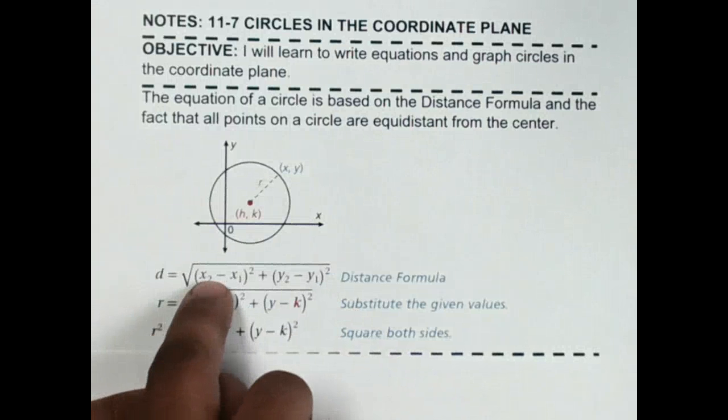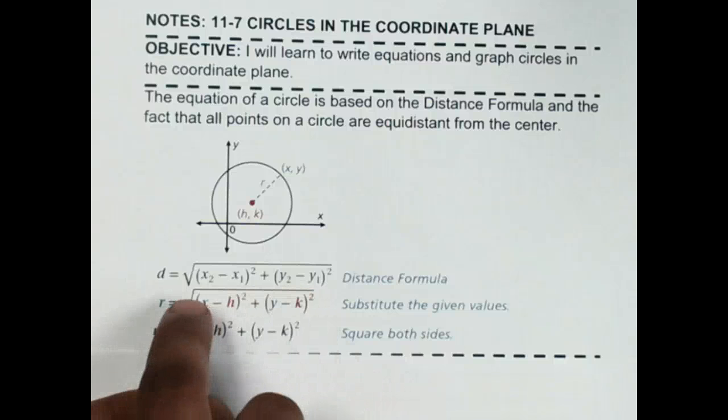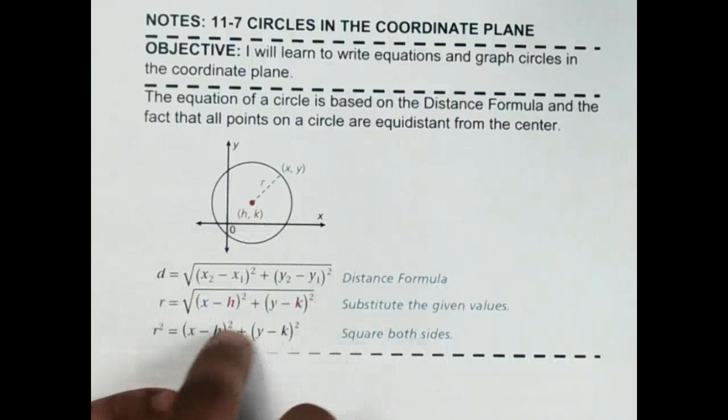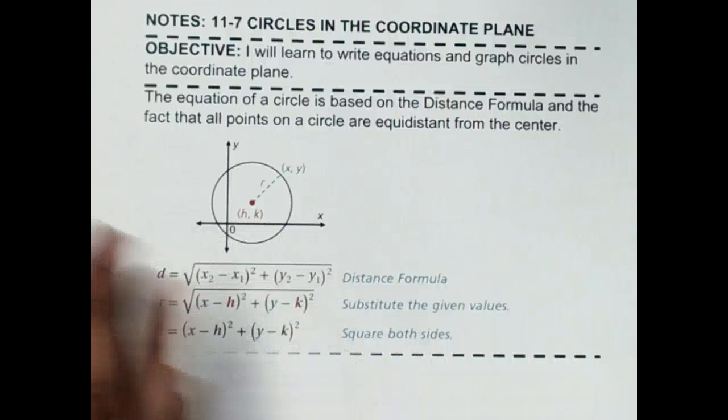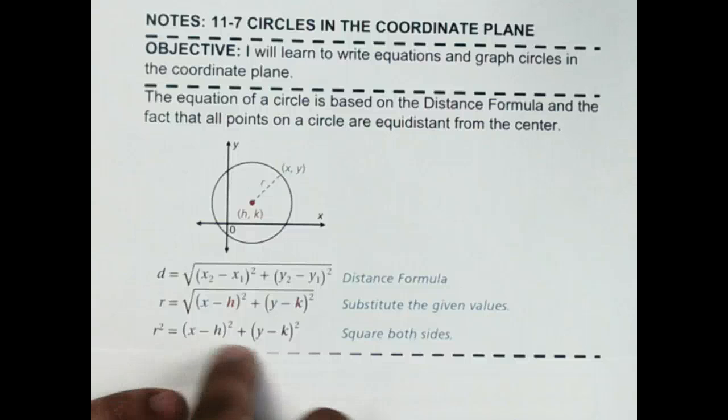We substitute h and k as my x₁, y₁, and then simplify. We square both sides, and we get that r squared, which is the radius, is equal to (x - h)² + (y - k)².